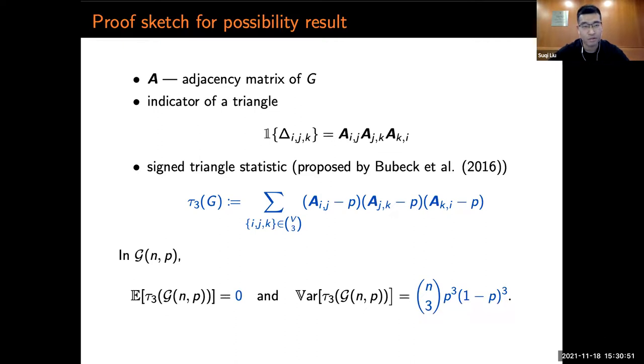In G(n,p), because of the independence of edges, the calculation for signed triangle statistics is very simple. The expectation is zero, and the variance is upper bounded by n^3.